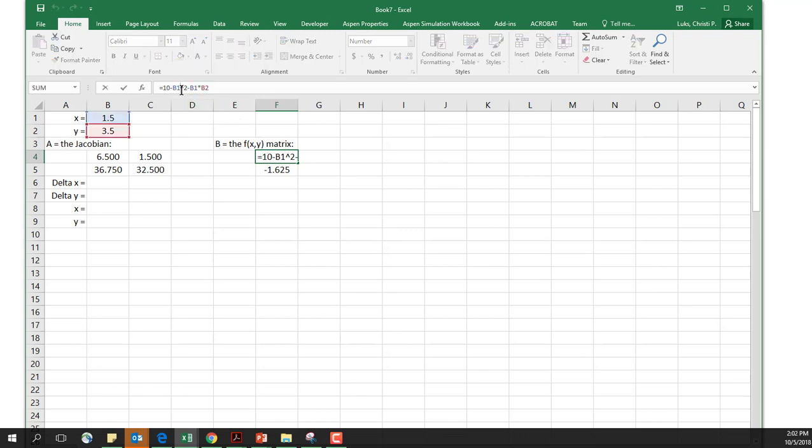And this is my functions. Remember, it's the negative of the function, the way I've got them set up for the derivatives. So this would be 10 minus x squared minus xy. And this one is 57 minus y minus 3xy squared.